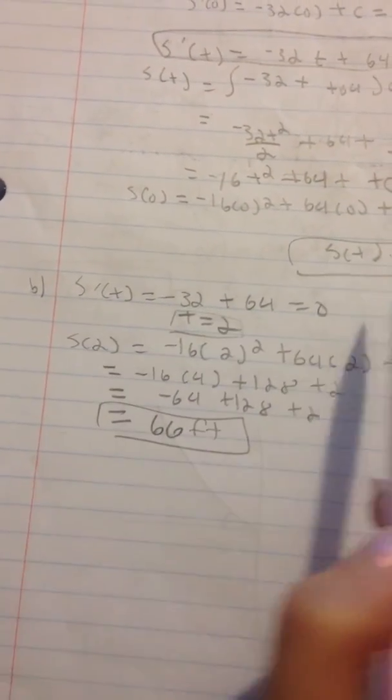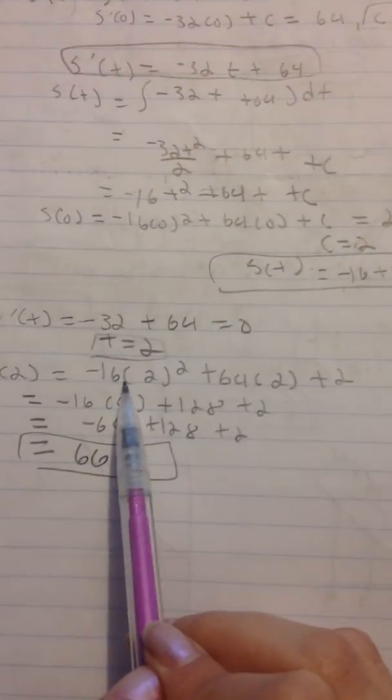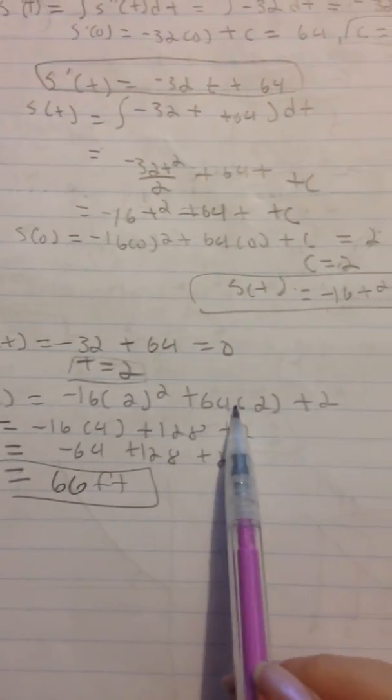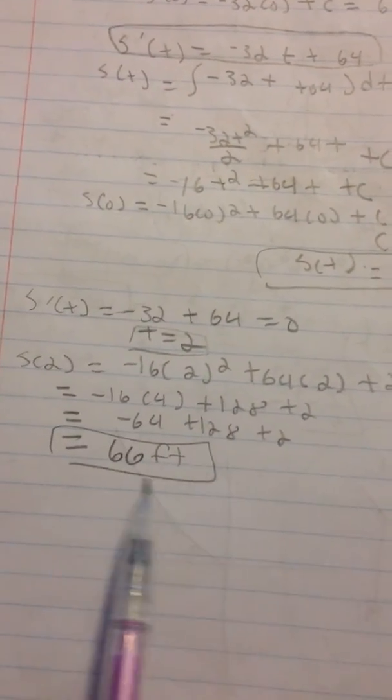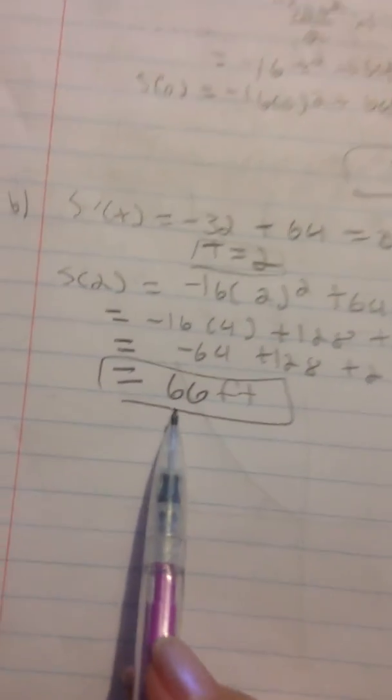So we evaluate S of 2 using this formula: negative 16 times 2 squared plus 64 times 2 plus 2. We work this out and get 66 feet.